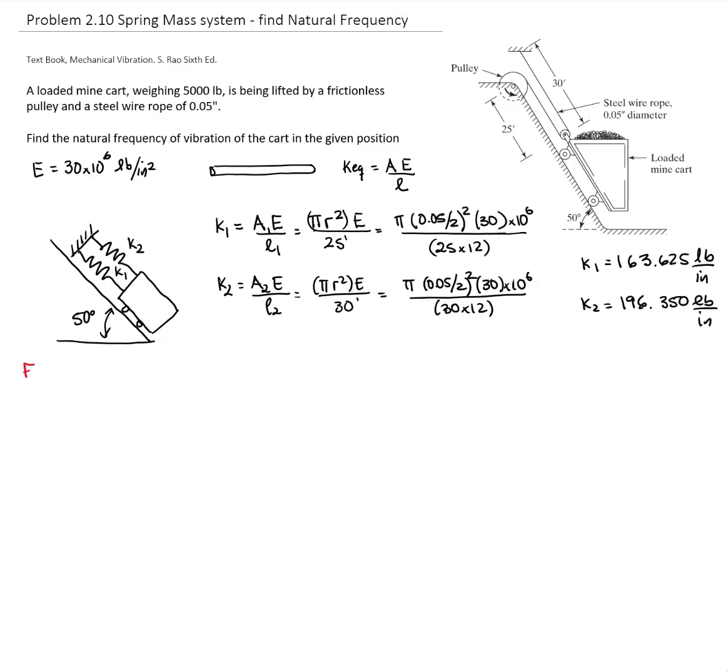Now we do our free body diagram. We draw our mass with the force of spring 1, which is K1 times x, and the force of spring 2, which is K2 times x. We have our weight W and the normal force N.